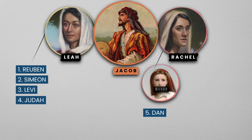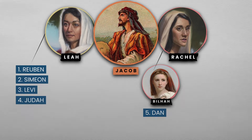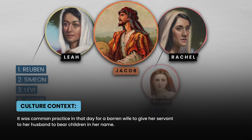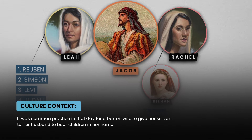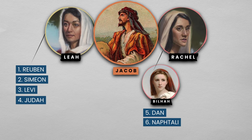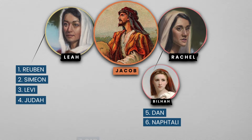Dan was born to Jacob by Bilhah, his wife Rachel's handmaid. It was common practice in that day for a barren wife to give her servant to her husband to bear children in her name. Naphtali was the next child, also through Bilhah.